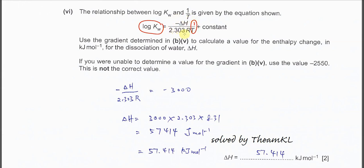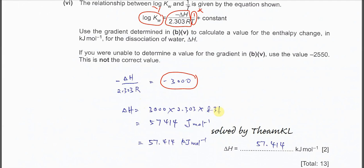The gradient equals −ΔH divided by 2.303R. So we set −3000 equal to −ΔH divided by (2.303 × 8.31), where R = 8.31 J mol⁻¹ K⁻¹ from the data table. Calculating: 3000 × 2.303 × 8.31 gives the value in joules per mole. Converting to kilojoules by dividing by 1000, we get approximately 57.4 kJ mol⁻¹.